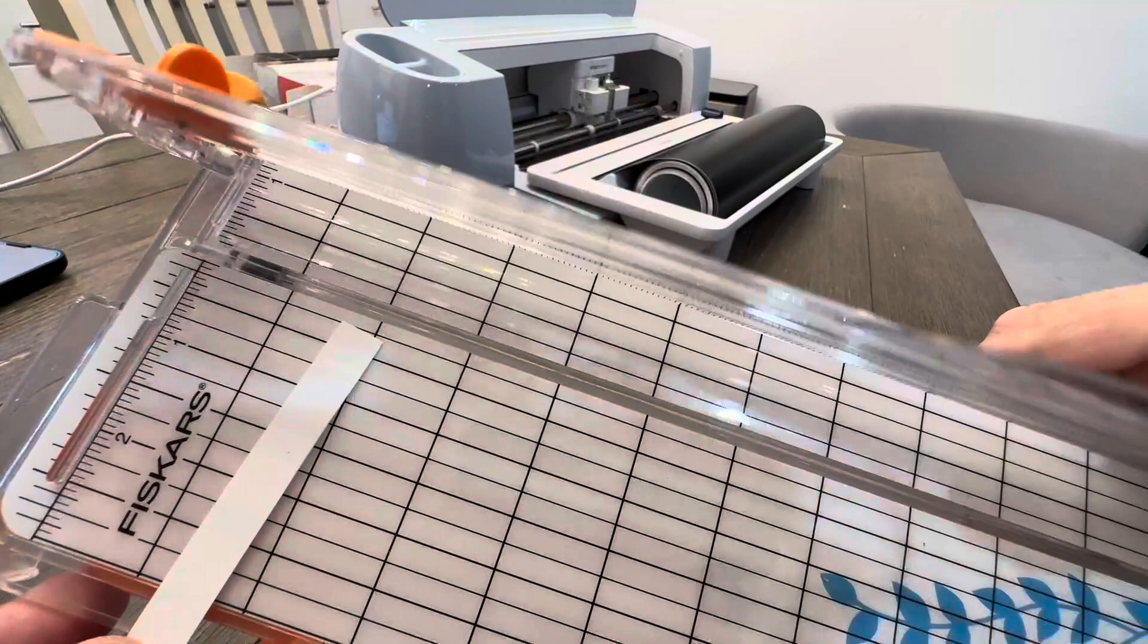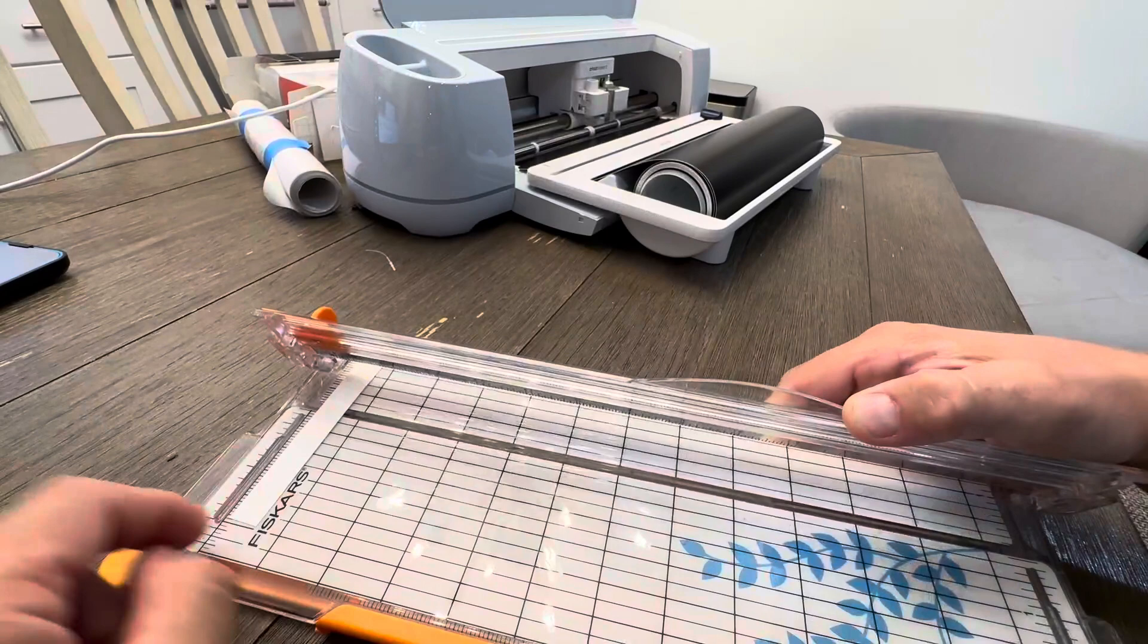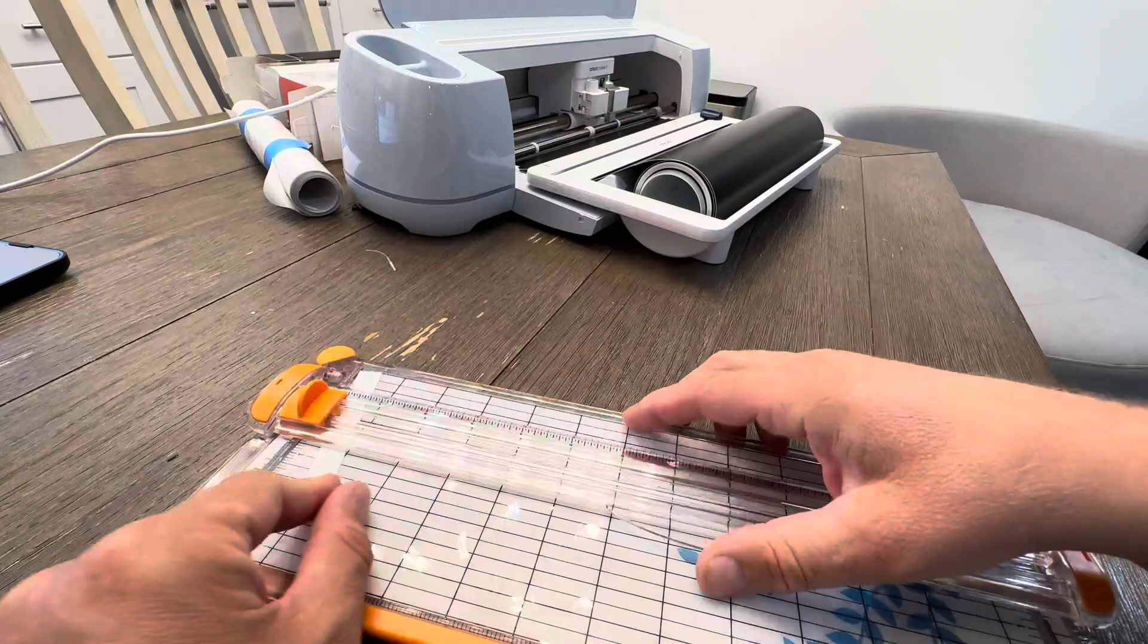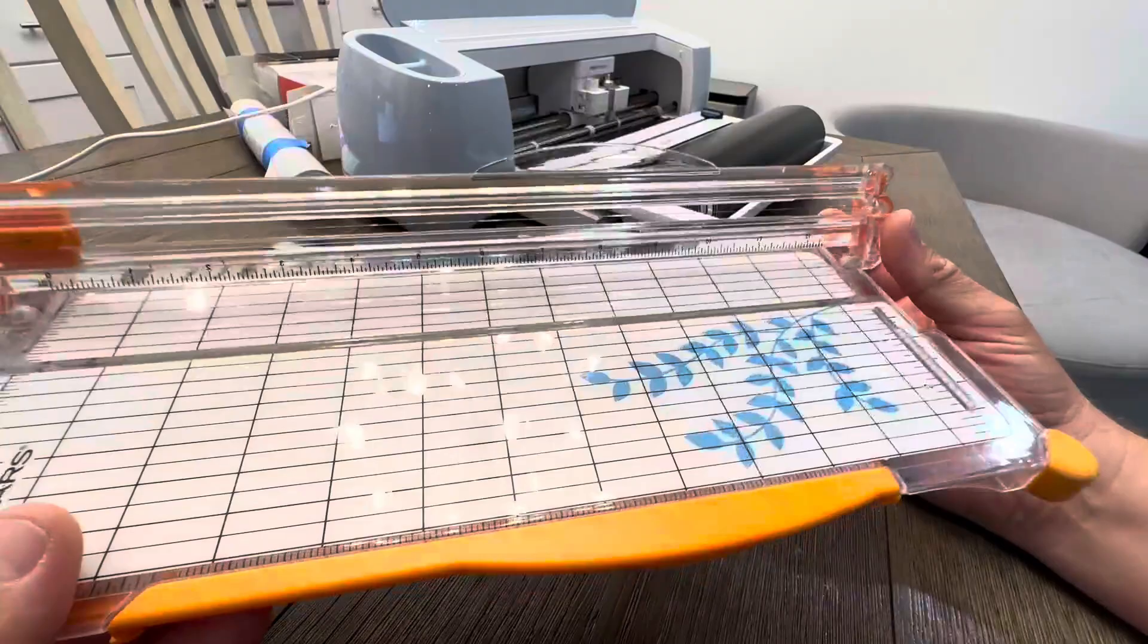So let's say if you wanted to cut this at two inches, you could hold it and drop it down. Well, the little piece moved, but you get the idea if it's a full sheet of paper up to 12 inches. So it's a really nice piece of equipment.